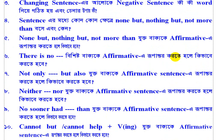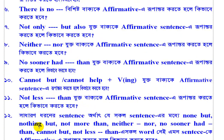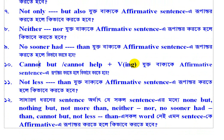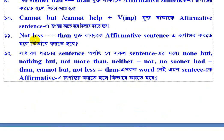The key structures covered include: affirmative to negative transformations using 'not only but also', 'neither nor', 'not so now', 'cannot but', 'could not help', 'not less than', 'nothing but', 'not more than', and 'neither nor'. These are the negative sentence structures that can be converted to affirmative responses.